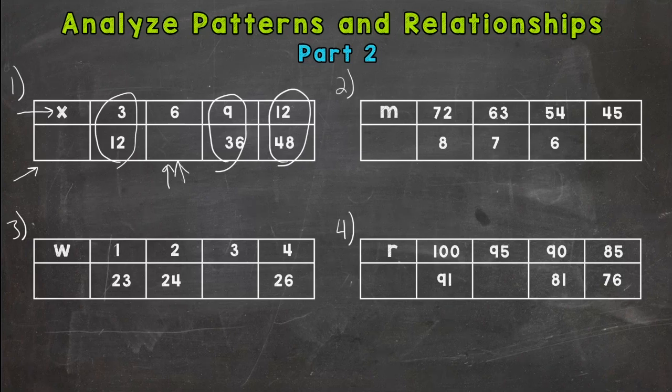So how do we get 3 equal 12? We're increasing in values, so it's either going to be addition or multiplication. Let's try add 9. 3 plus 9 does equal 12. Let's try it for 9 to 36. 9 plus 9, does that give us 36? No. So adding 9 does not work. Remember, it has to work for all of them.